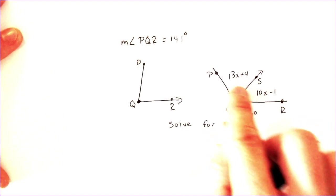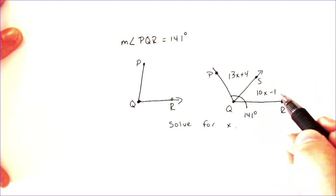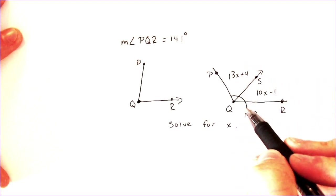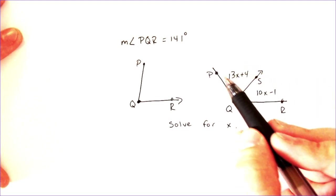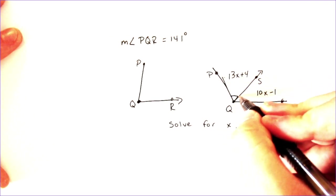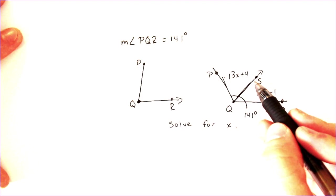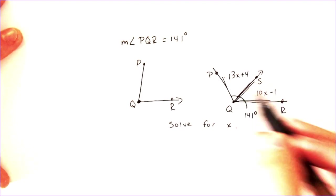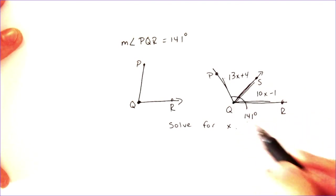So, if I'm given those two things, I can use those to be able to solve for x, and that's what I want to do. I want to solve for x. So, if I know both of these two things, then I can add up these two parts to equal the whole. So, I can add up this chunk right here, PQS, and SQR, and it would equal the whole thing, which is 141.